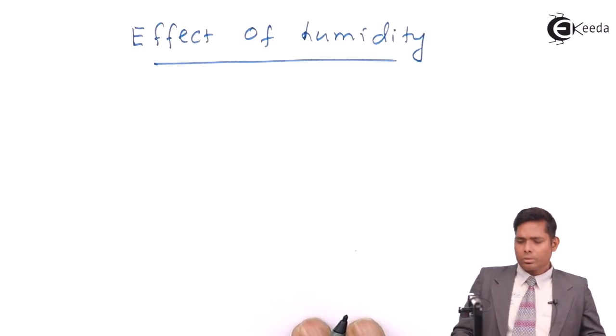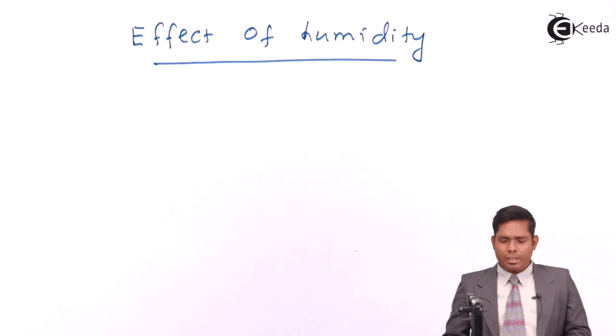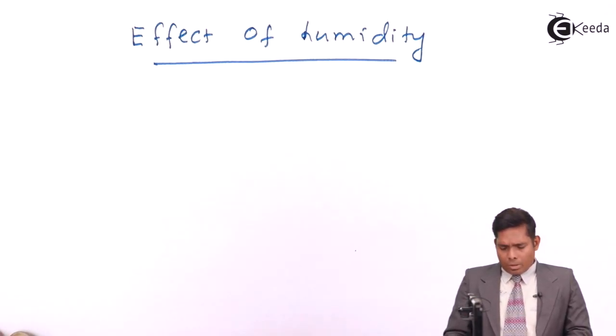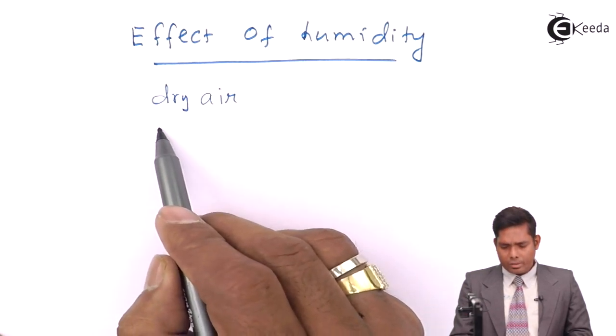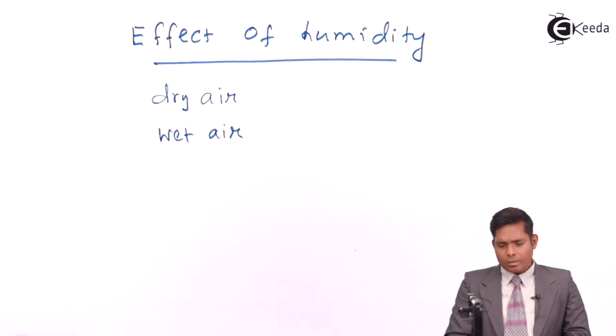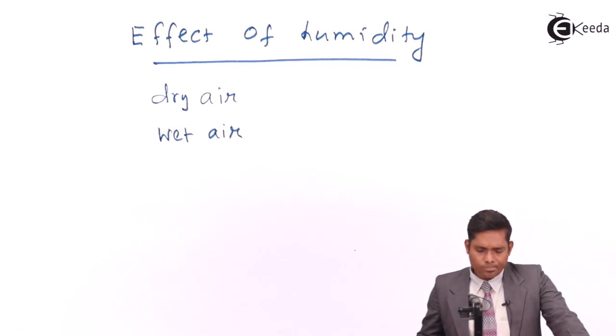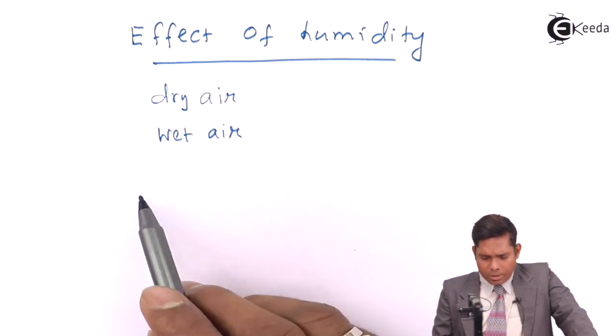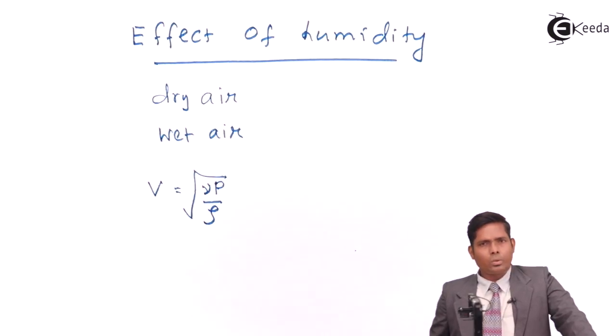The effect of humidity. Humidity is the amount of water content in wet air and dry air. If sound travels in air, we have two conditions: dry air and wet air. In case of humidity, more water content, we have the expression that speed of sound is gamma P by rho.